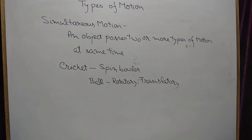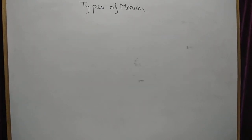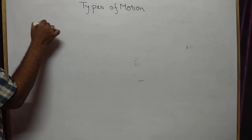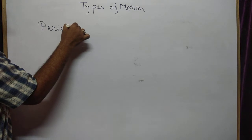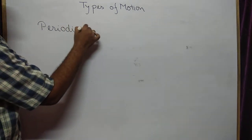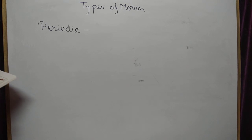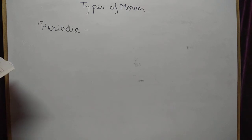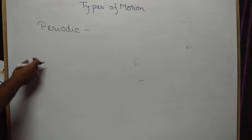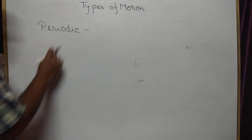Now we move to the next type of motion: periodic motion. In periodic motion, the motion repeats itself after a fixed interval of time. This type of motion is known as periodic motion.